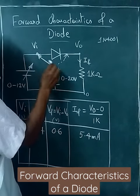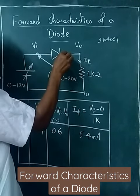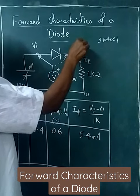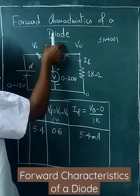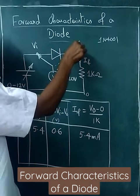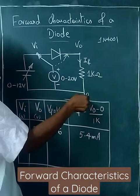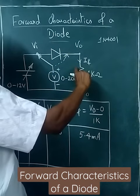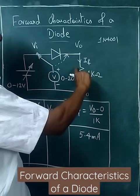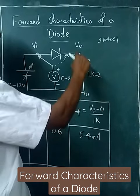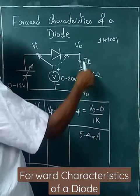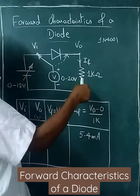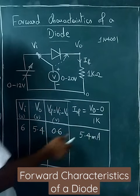Then disconnect this and connect it here — this gives V_out. So V_in minus V_out gives the forward voltage drop across the diode. V_out minus 0 gives the voltage drop across the 1k ohm resistor. Therefore, V_out divided by 1k will be the forward current that you plot.